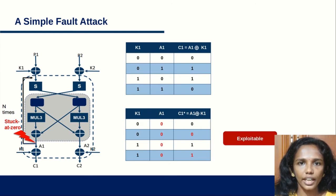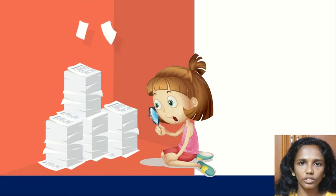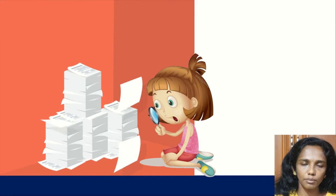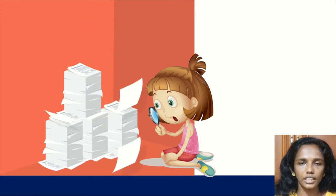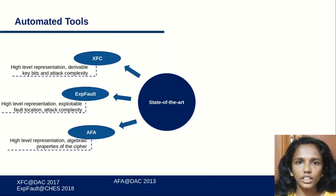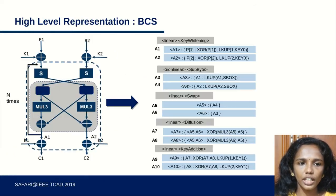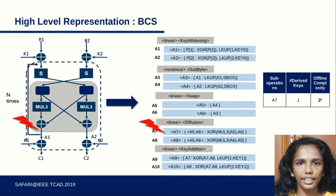How effective a fault attack is depends on the location of fault injected and the type of fault injected. There has been a huge amount of work in the last two decades to find the exploitable locations in block ciphers. From 2013 onwards, some automated tools emerged that find the exploitable locations in ciphers, such as XFC, EXP fold, and AFA, which work at high-level representation of the cipher and find exploitable locations along with key bits and attack complexity.